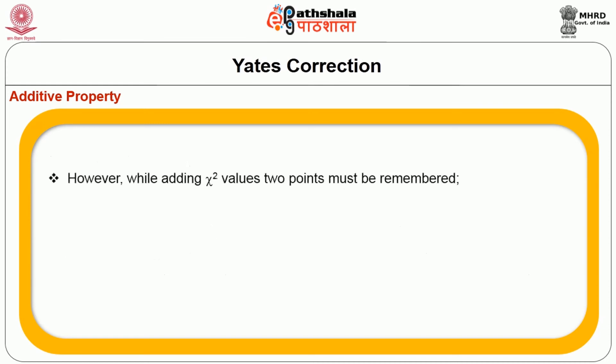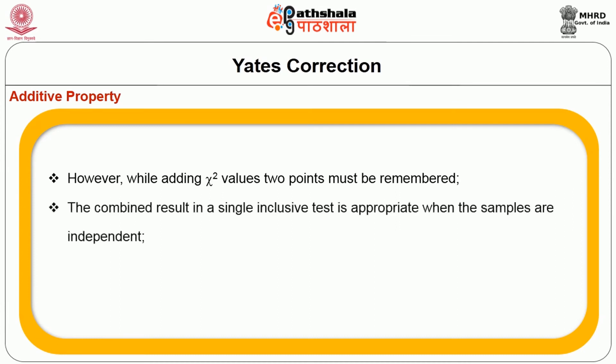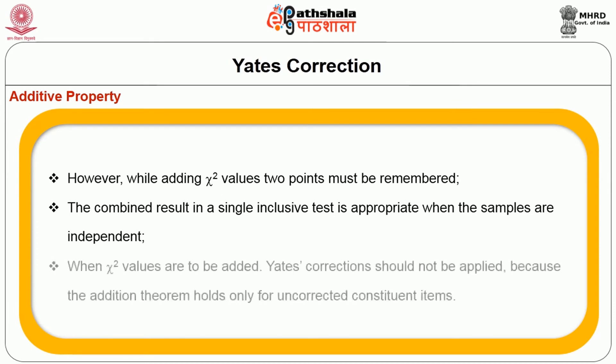Additive property: One merit of the chi-square test is that independently derived chi-square values from samples of similar data can be combined by simple addition. The sum of the chi-square values will itself have a chi-square distribution with degrees of freedom equal to the sum of the degrees of freedom of the separate chi-square values. Two points must be remembered: the combined result is appropriate only when samples are independent, and Yates correction should not be applied when adding chi-square values, as the addition theorem holds only for uncorrected constituent items.